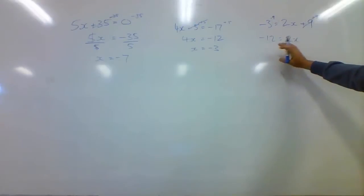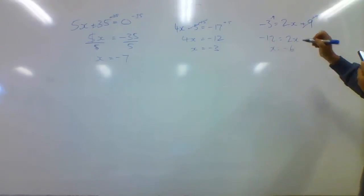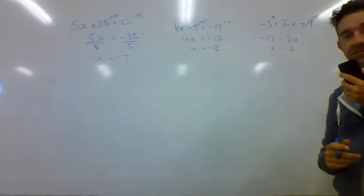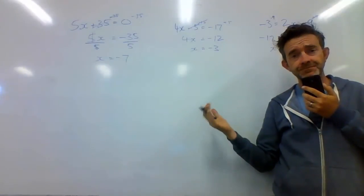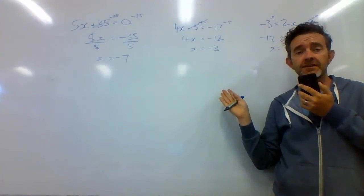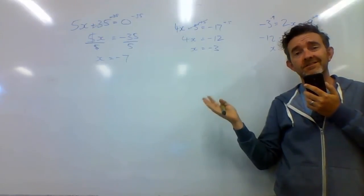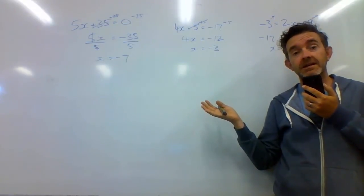Again, 2 times something is negative 12. x is going to be equal to negative 6. Alright, so that's the basics really. If you're just new to this kind of thing, that might be a bit tricky. If you're a year 10 student, that should be pretty much your bread and butter by now.